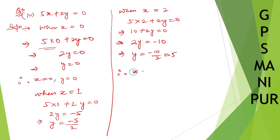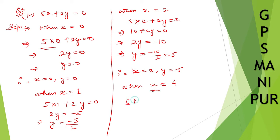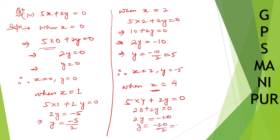Now let us put x equal to 4 for our convenience. When x is equal to 4: 5 into 4 plus 2y equal to 0, so 20 plus 2y equal to 0, 2y equal to minus 20, so y is equal to minus 10. Therefore when x is equal to 4, y is equal to minus 10.